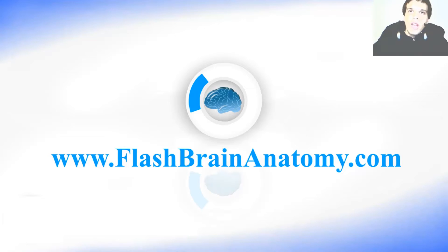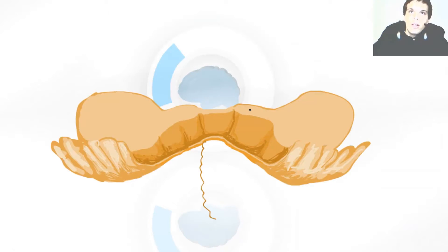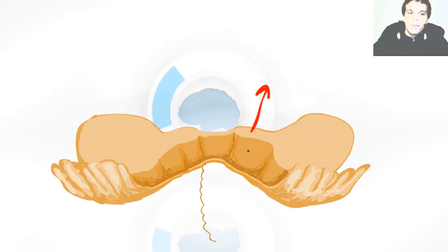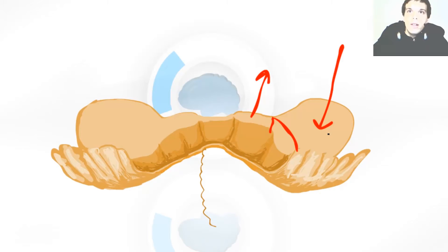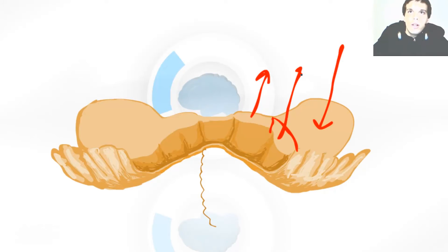For example, the fibers that carry information from the cerebellum to the midbrain go through the superior peduncle. The middle one usually contains the fibers coming from the nuclei of the pons, and they end in the cerebellar cortex. Those fibers group in the superior, inferior, and deep ones. The inferior one connects the cerebellum with the spinal cord and the medulla oblongata.